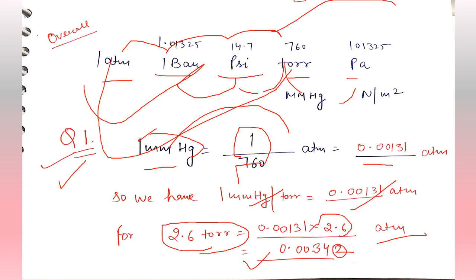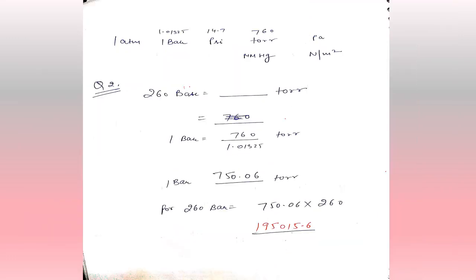We get 0.00340 atm. Moving on to the next problem — we have 260 bar and need to convert it into torr. We have bar going to torr, which is the forward direction.